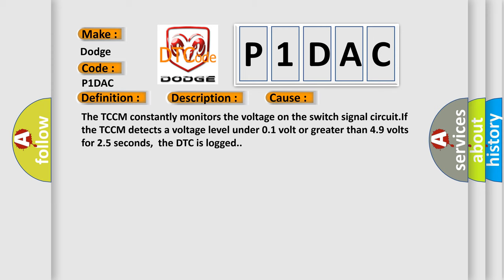The TCCM constantly monitors the voltage on the switch signal circuit. If the TCCM detects a voltage level under 0.1 volt or greater than 4.9 volts for 2.5 seconds, the DTC is logged.